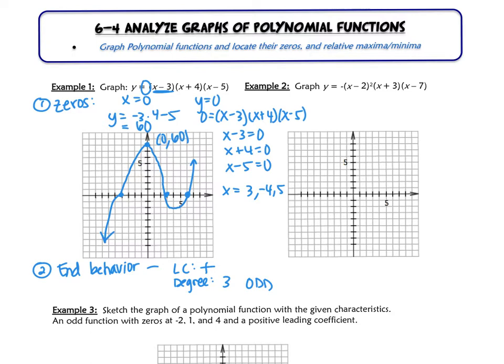Some vocab to know. This point up here that hits a high point, this is called a relative max. This point down here, it's just a sketch so we don't know exactly where it would be, but this is called a relative minimum. So in general, when we're graphing, we're going to be looking for those zeros and the end behavior.